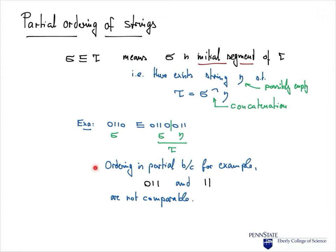The ordering is partial because, for example, the strings 0,1,1 and 1,1 are not comparable — neither of those two strings is an initial segment of the other. So not every two strings are comparable under this relation.